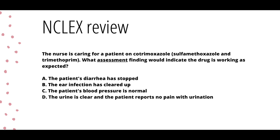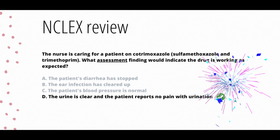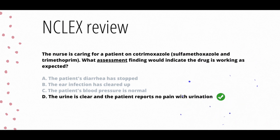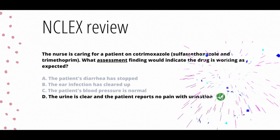Now for our NCLEX review — recall the reasons why this drug is taken. The question: 'The nurse is caring for a patient on cotrimoxazole, the sulfa and trimethoprim combo. What assessment finding would indicate that the drug is working as expected?' A: the patient's diarrhea has stopped. B: the ear infection has cleared up. C: the patient's blood pressure is normal. D: the urine is clear and the patient reports no pain with urination. If you answered D, you are correct — that goes back to why it's used: UTIs, STIs, pneumonia, and trachoma. We're not treating diarrhea, ear infections, or blood pressure.